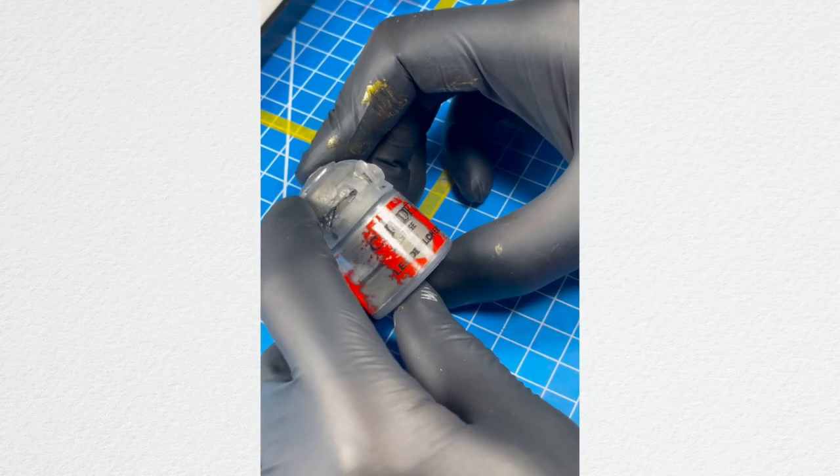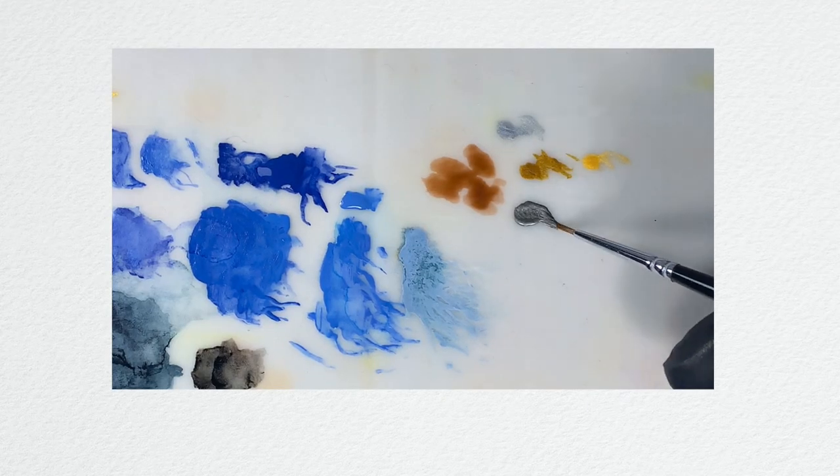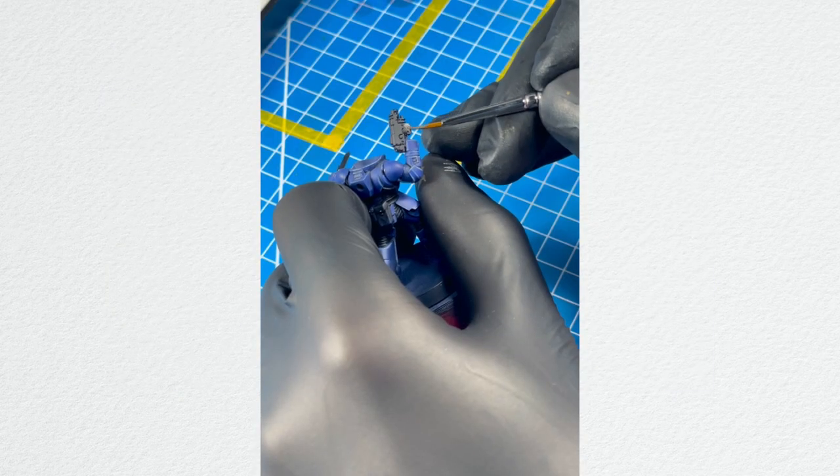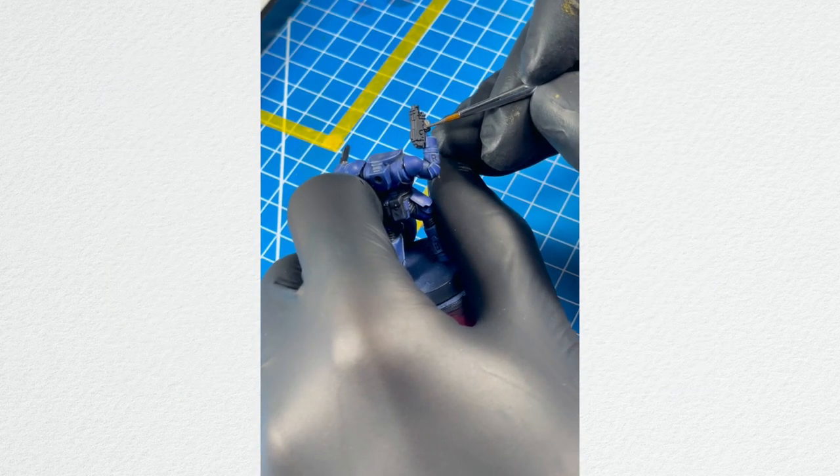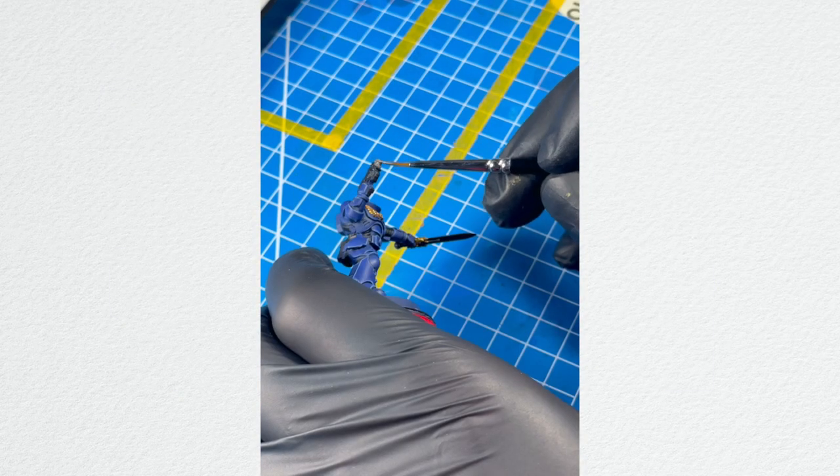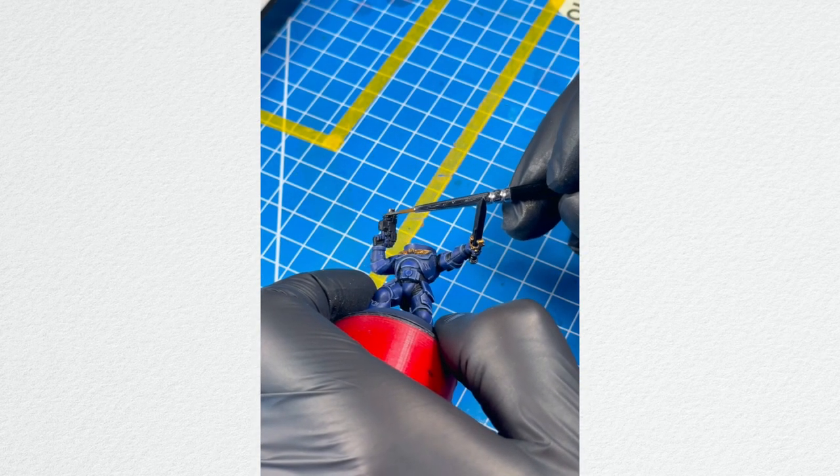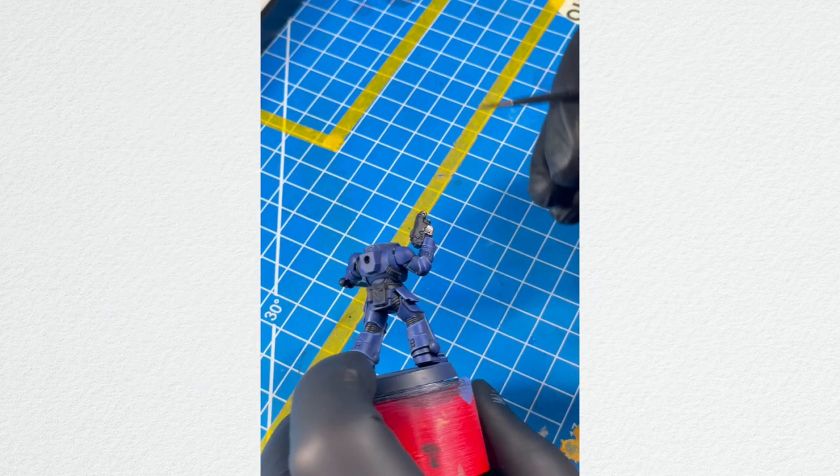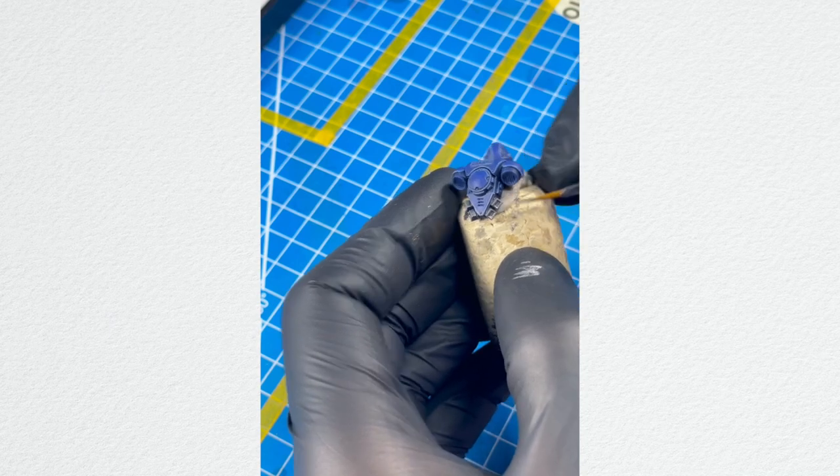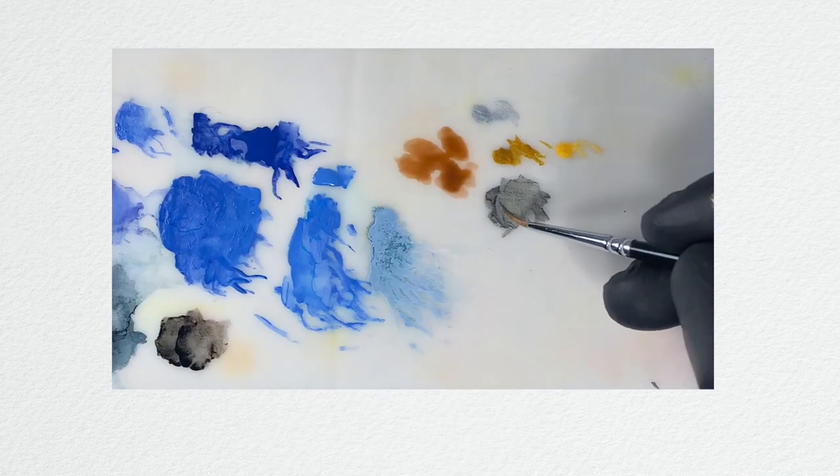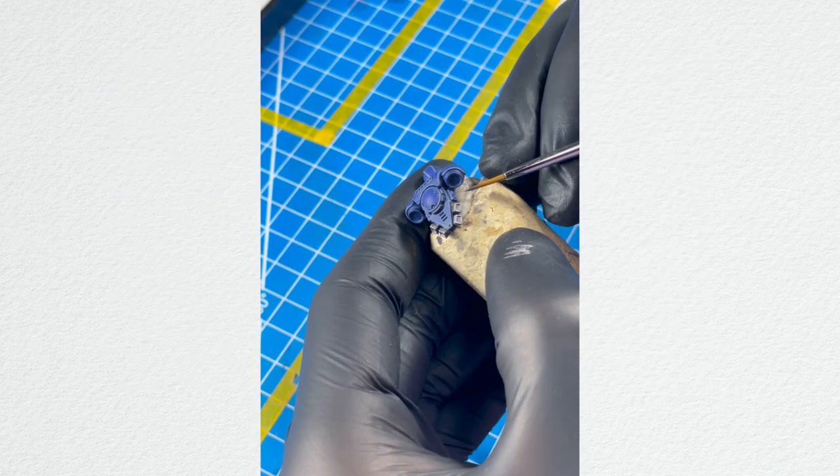It's silver time. Grab your Leadbelcher and paint all the silver details: the lower part of your gun, the muzzle of your gun, the sword itself, and some details on the back of the backpack. Take it all, and then we're going to be washing it all using Nuln Oil and putting some highlights using Ironbreaker.